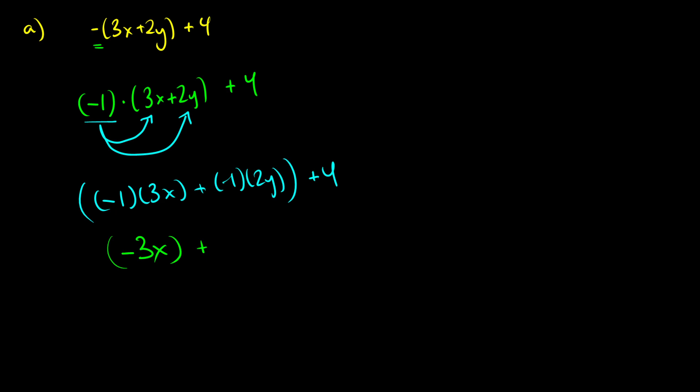And then we add four to that. So this is about as far as we can go because we have one with an x, one with a y, and then one without any variable, so we can't really mash these together anymore. That's how you evaluate the first one.